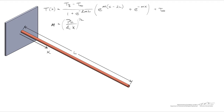In a prior screencast we read the temperature profile for a fin, assuming we know the temperature at the base and that the tip is adiabatic. In this screencast I want to talk about the whole purpose of the fin, which is to remove heat from a surface. We want to figure out what Qf is — the rate at which the fin is pulling heat from the surface in watts — and then discuss the trade-offs of long fins versus short fins.